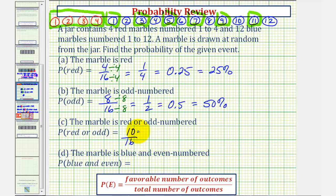Simplifying, we have a common factor of two, which gives us 5/8 as our probability of a marble being red or odd.